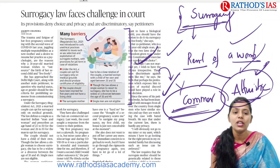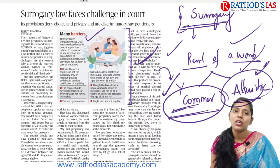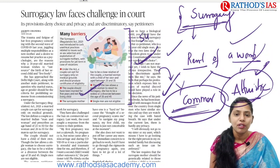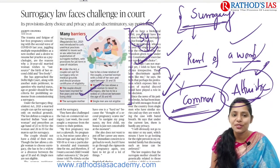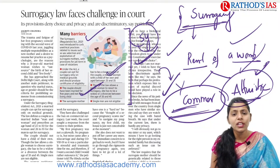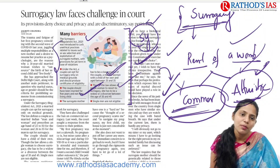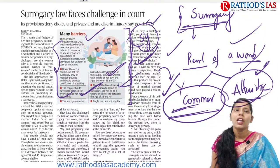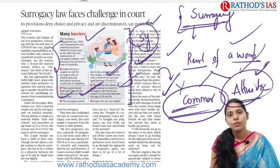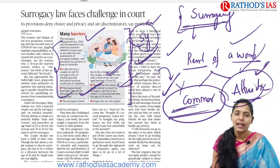Under this act, a couple can opt for surrogacy only on medical grounds — they need to obtain an eligibility certificate. The couple should have been married for at least five years. The surrogate mother has to be a close relative of the couple, so only altruistic surrogacy is permitted — not commercial surrogacy. Single men are not eligible for surrogacy under this act.